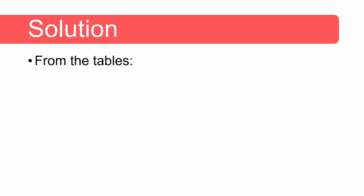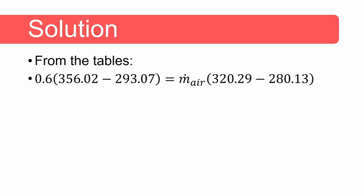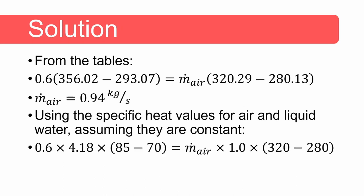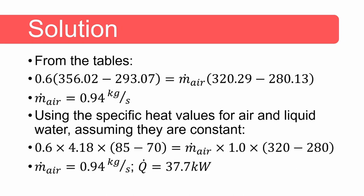We can read the values for the enthalpy of water and air from the tables. Water is a compressed liquid and we use the value of enthalpy of saturated liquid water at the same temperature. For air we use the table of ideal gas properties of air. We can now calculate the value of the air flow rate and obtain a value of 0.94 kilograms per second. We can also calculate the value using specific heats for air and liquid water and arrive at the same value. See if you get the same answer as me using these two different approaches.